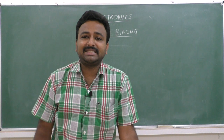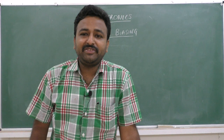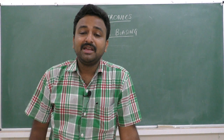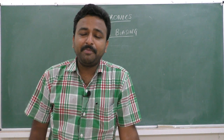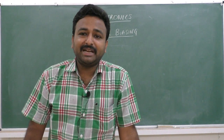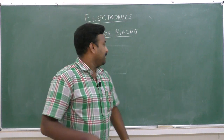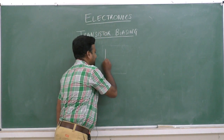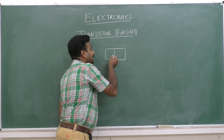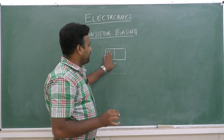Let us see how a transistor is constructed and how it is different from diodes. A diode is constructed by doping P-type impurities on one side of an intrinsic semiconductor crystal and N-type impurities on the other side of the same crystal. By doping in this method, a semiconductor P-N junction diode is constructed.